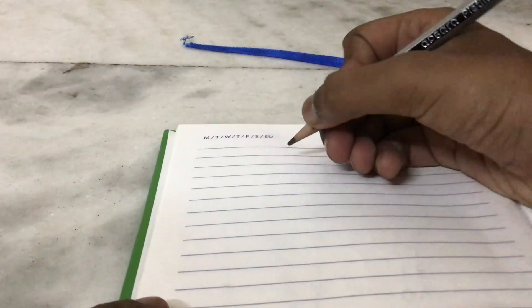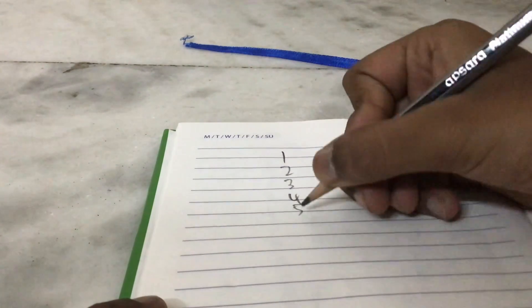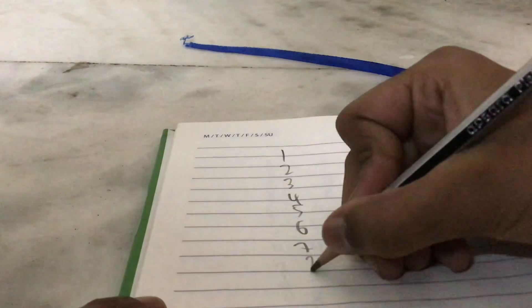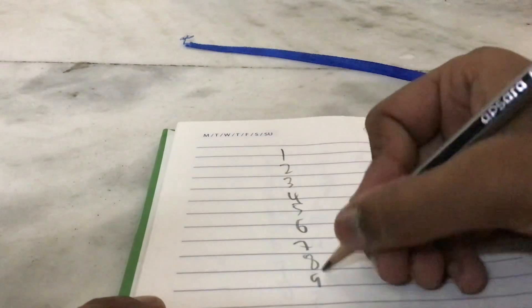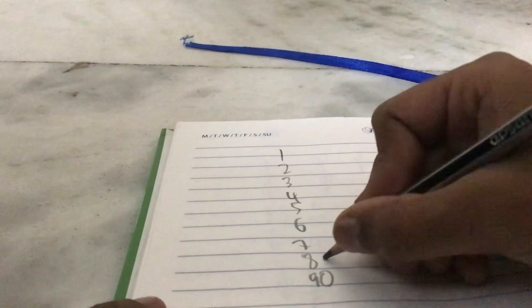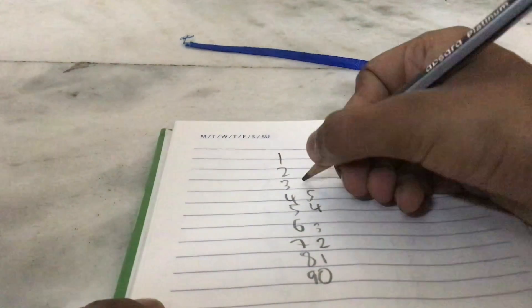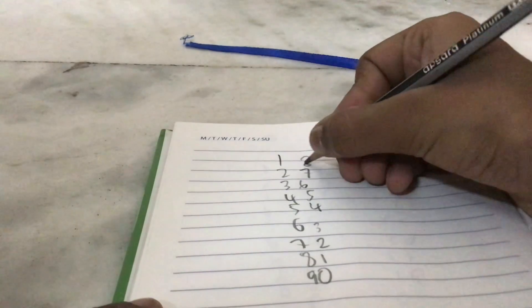Today I'm going to teach you how to do the nine table trick. First, write one, two, three, four, five, six, seven, eight, nine. Now here you're going to put zero, one, two, three, four, five, six, seven, eight.